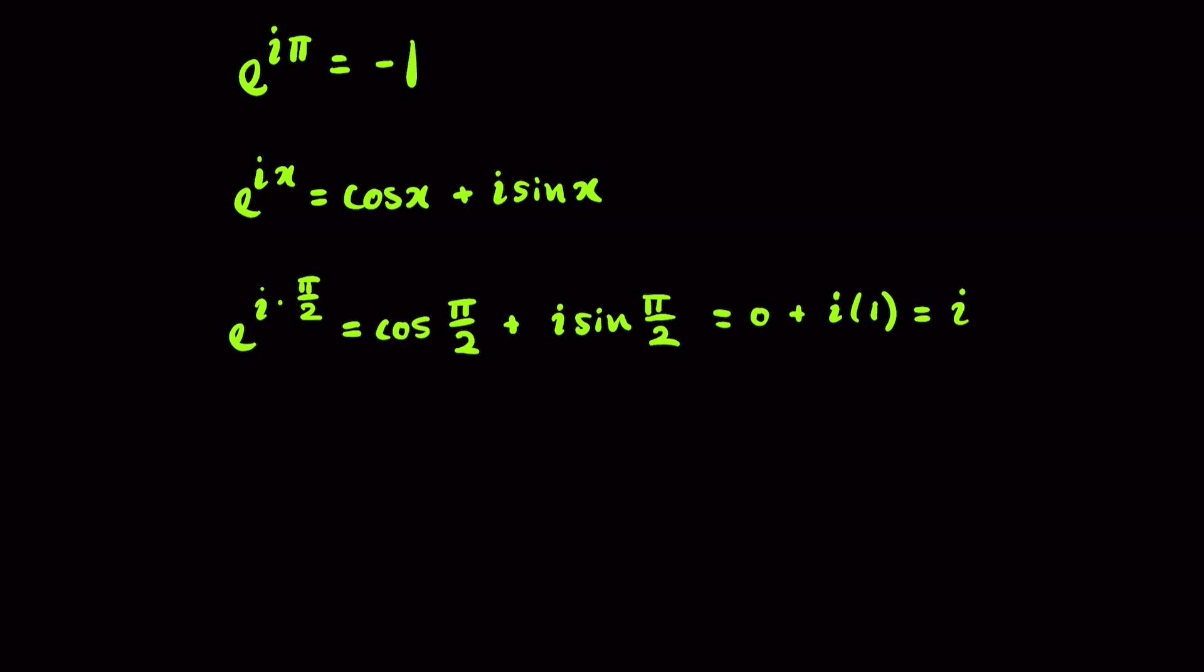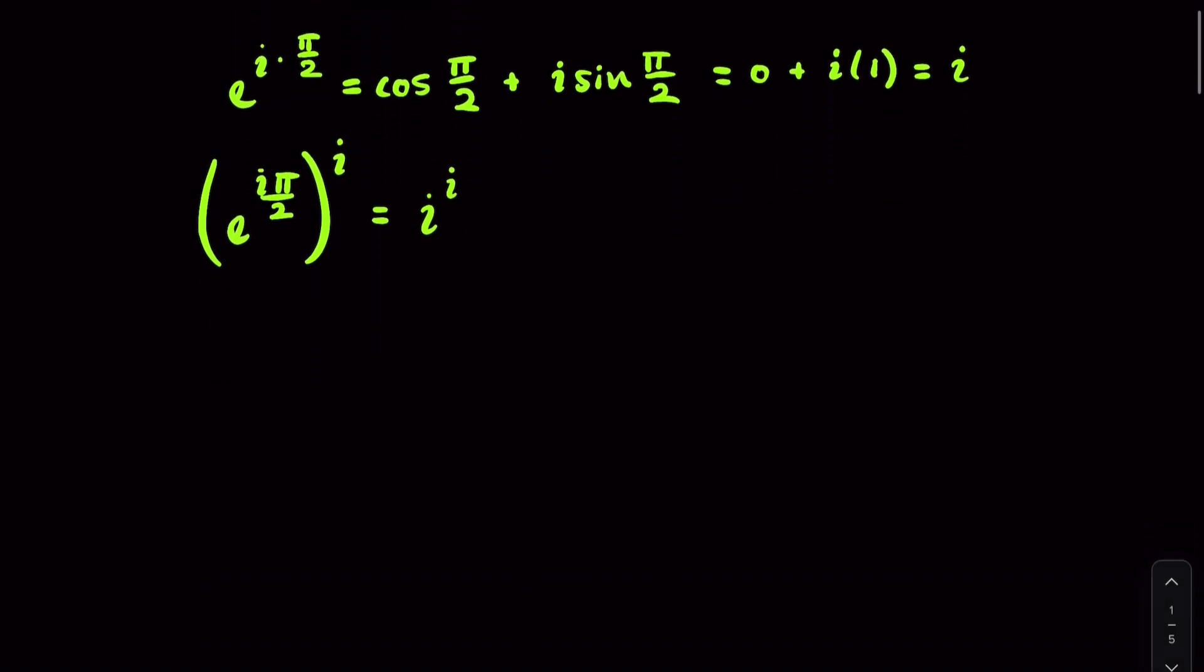Now, what happens if we raise both sides to the power of i? We would get e to the i pi over 2 to the power of i equal to i to the i. Now, we know from exponent rules that we multiply the exponents, and so we would get e to the i squared pi over 2 equal to i to the i.